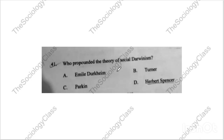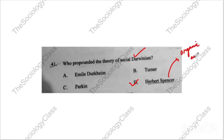Question number forty-one: 'Who propounded the theory of social Darwinism?' The correct answer is Herbert Spencer. I mention him everywhere — please remember organic analogy and Herbert Spencer. Questions from him always come. His important books should be noted. Emile Durkheim's books are also important.